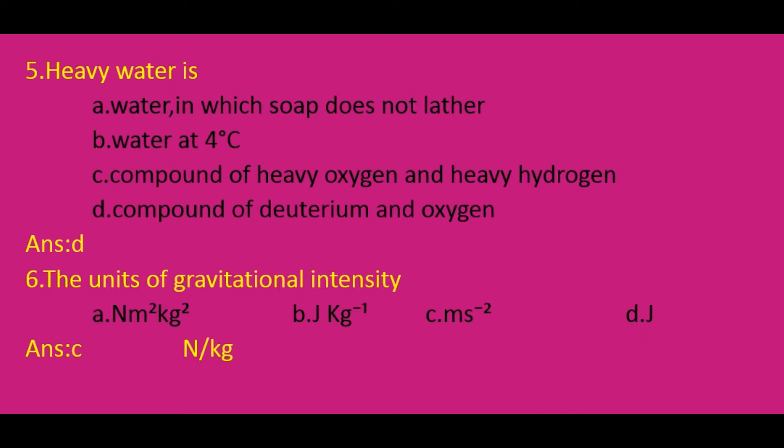The units of gravitational intensity: gravitational intensity is defined as the force on a unit mass at a point in the field. So the unit is m/s². The answer is option C. Another unit of gravitational intensity is Newton per kg, that is force per mass.